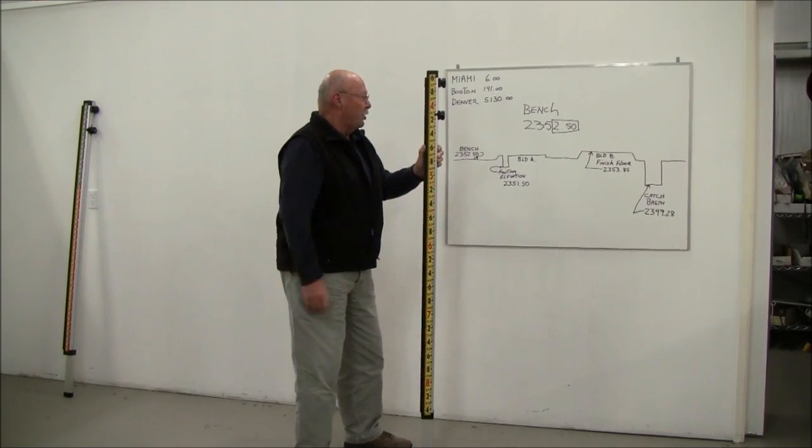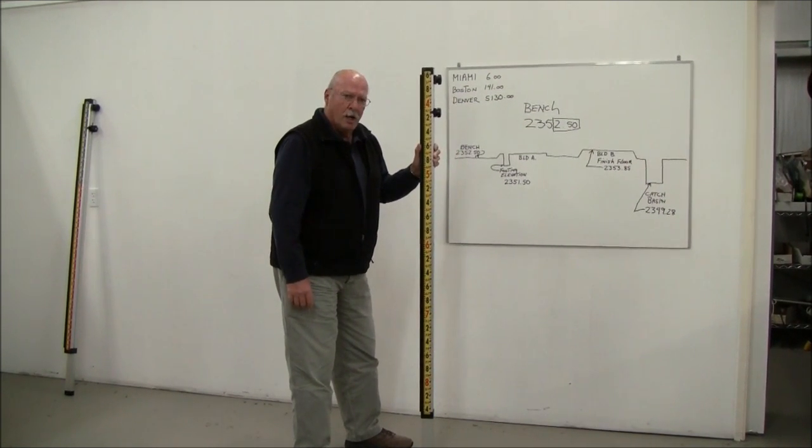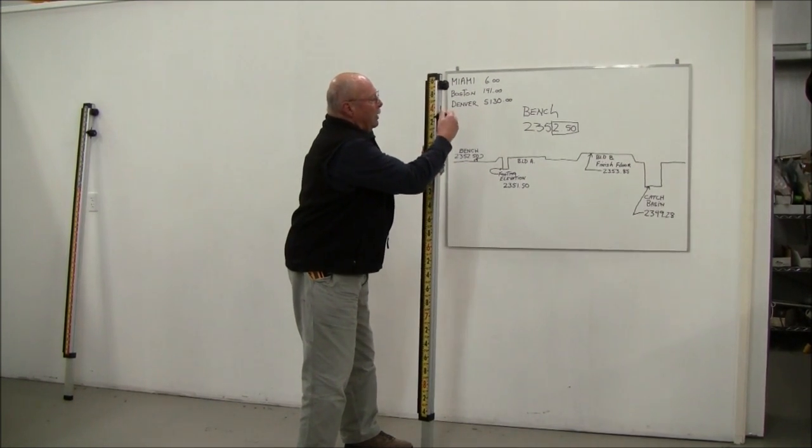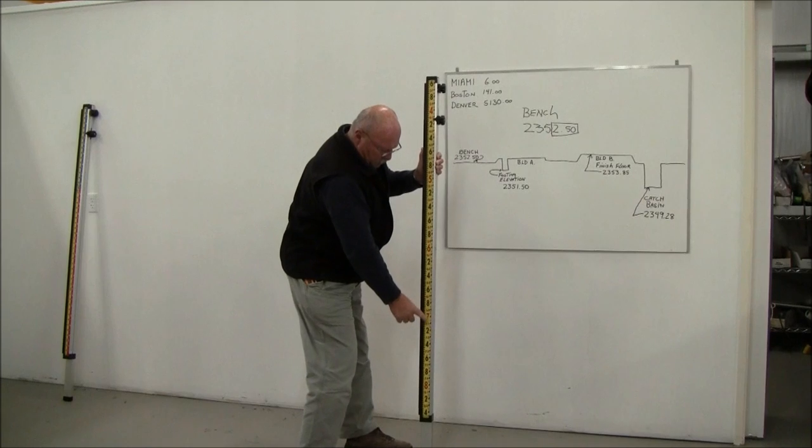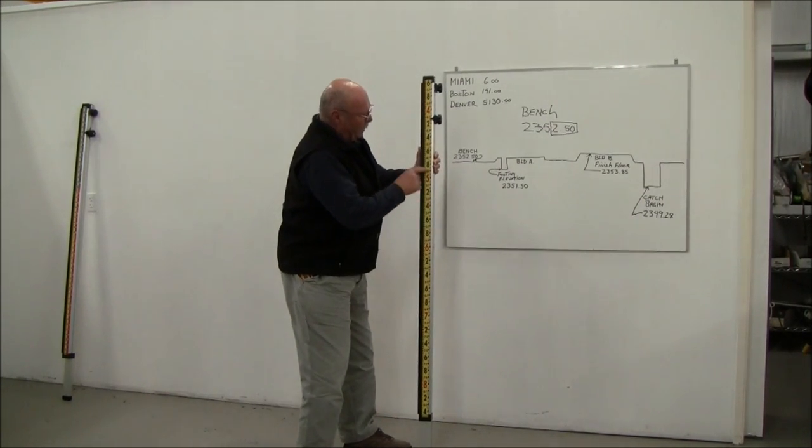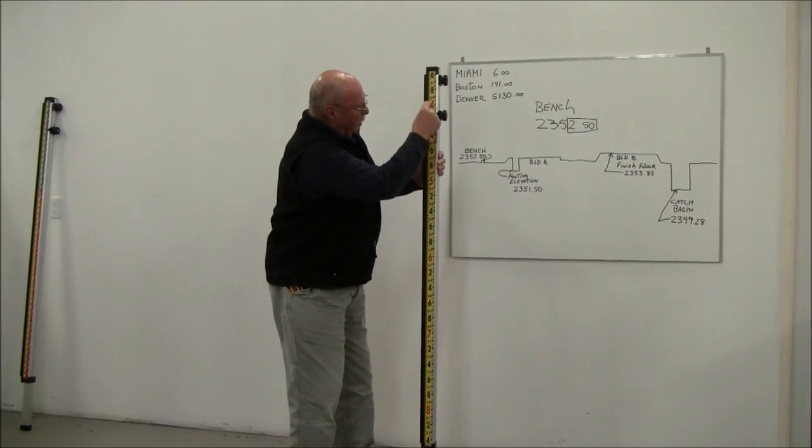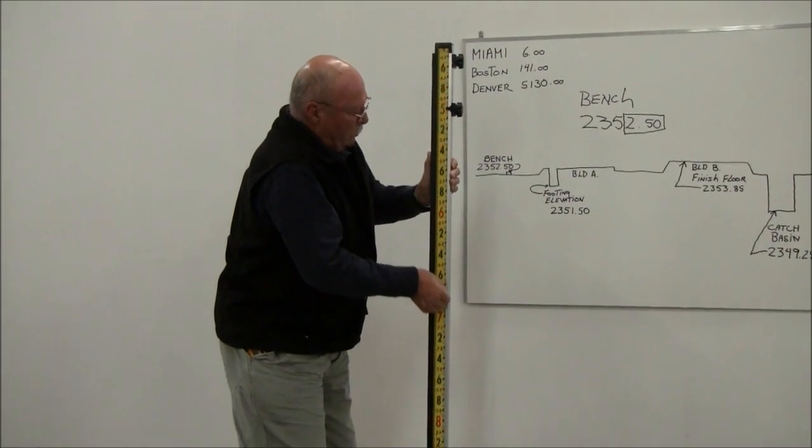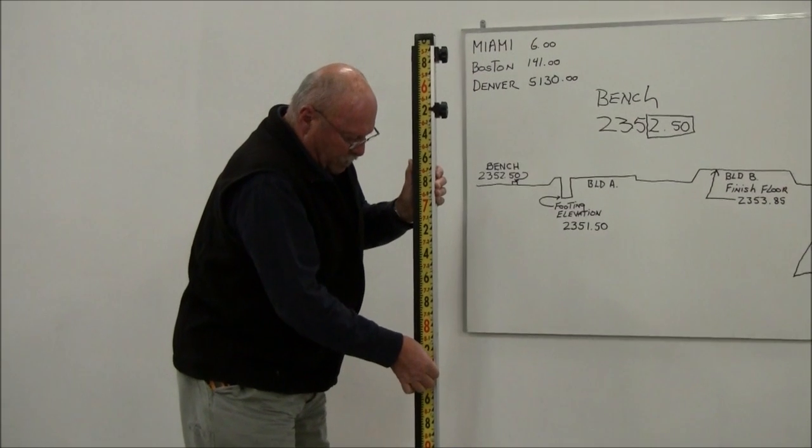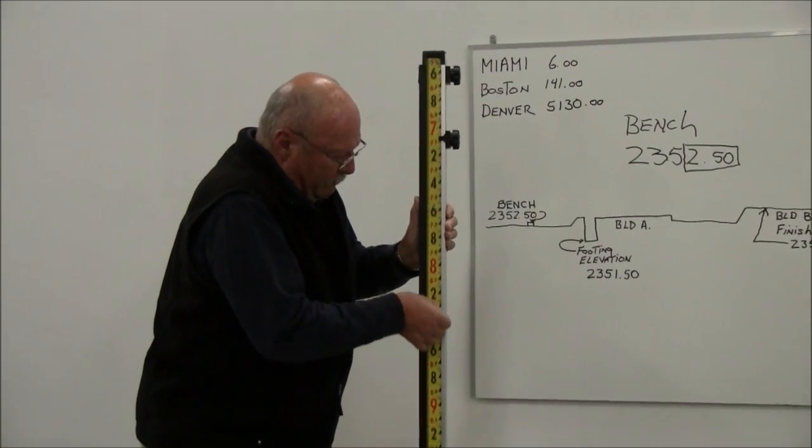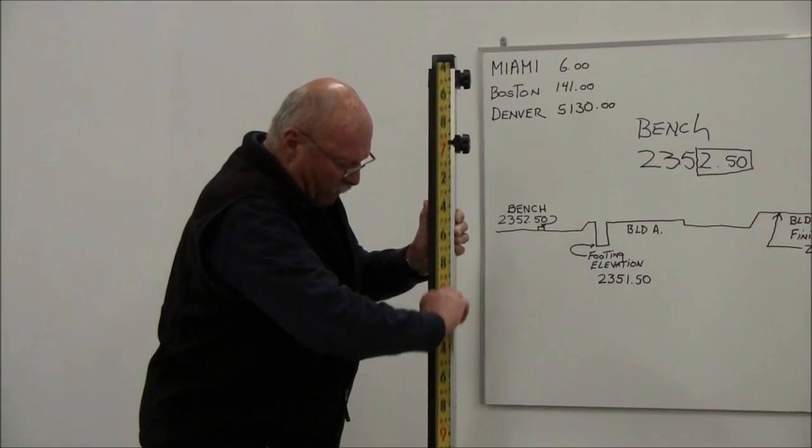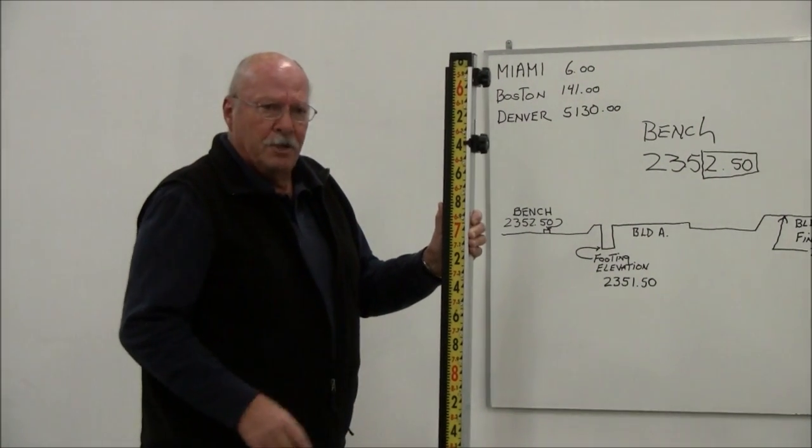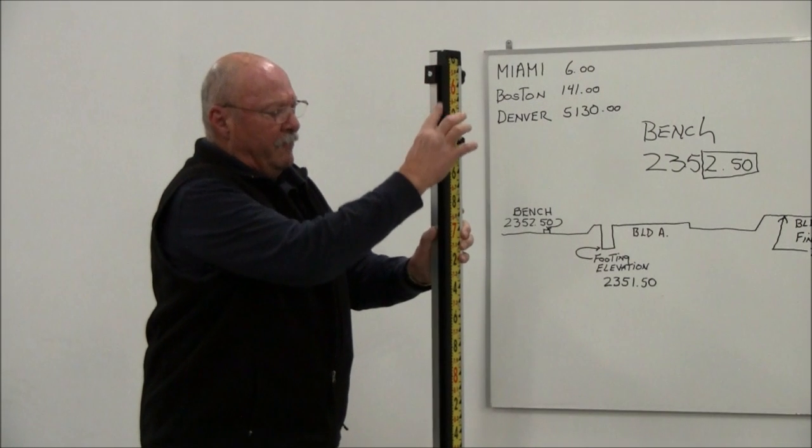By the way, this true elevation is elevation above mean sea level. So probably the first thing you'll notice about this grade rod is the numbers are not going the same way as a normal grade rod. You have 4 feet, 5 feet, 6 feet, 7 feet. The other thing you'll notice is this has a movable tape, and what that tape does is, by moving it, we're going to be able to set our bench elevation into the rod.